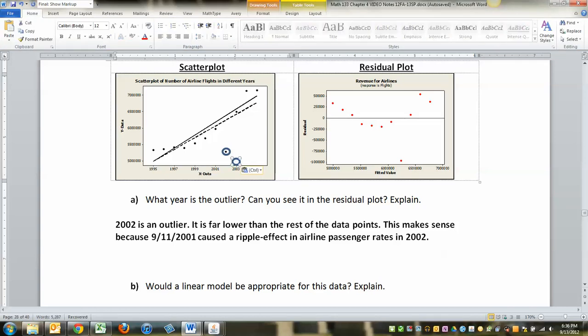Now, what year was that? Well, it was 2002. It is far lower than the rest of the data points. That makes sense because 9-11, 2001 was kind of at the end of that year. So the impact wasn't really felt by the airline industry until 2002 when a lot of people weren't flying on planes.